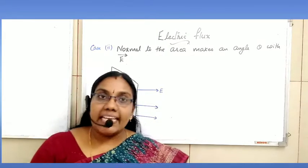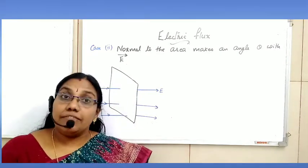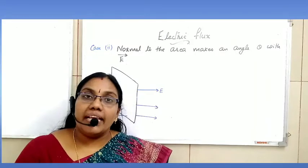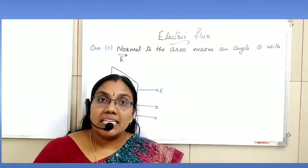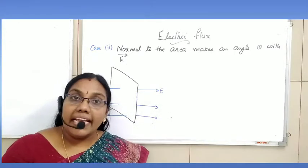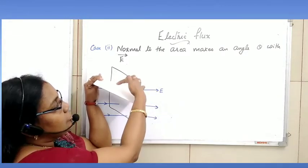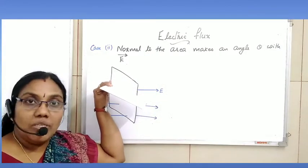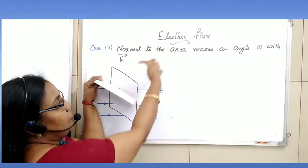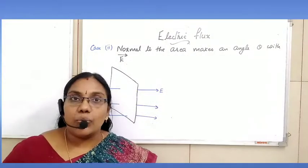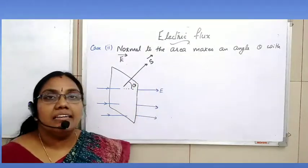Now we move on to the second case, where the normal to the area makes an angle theta with the direction of electric field. In the first case, the normal to the area was in the direction of electric field. Here, the area vector makes an angle theta with the direction of electric field.